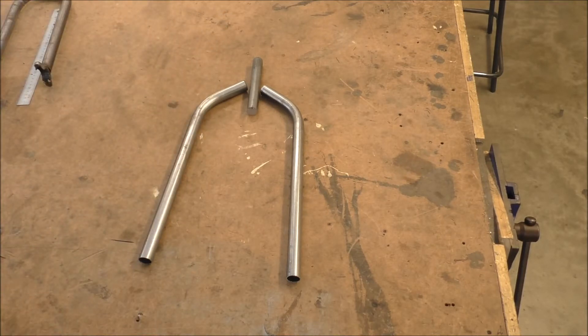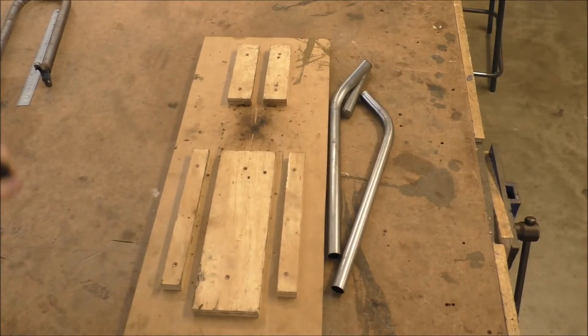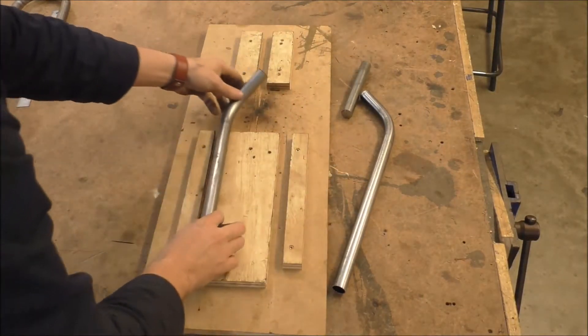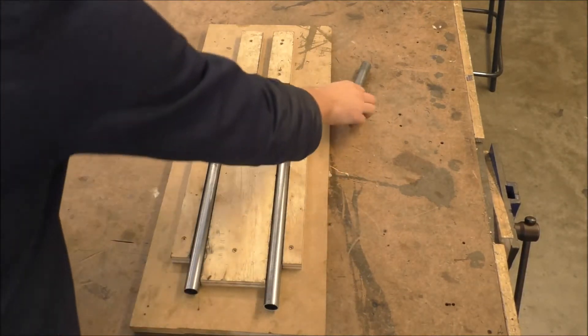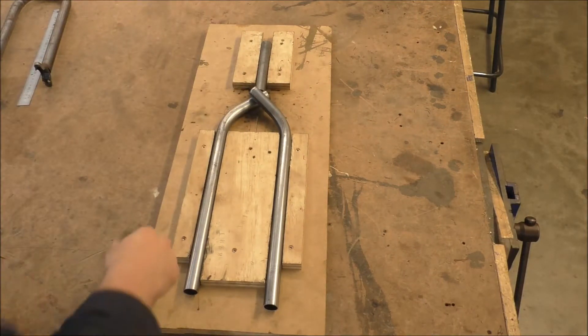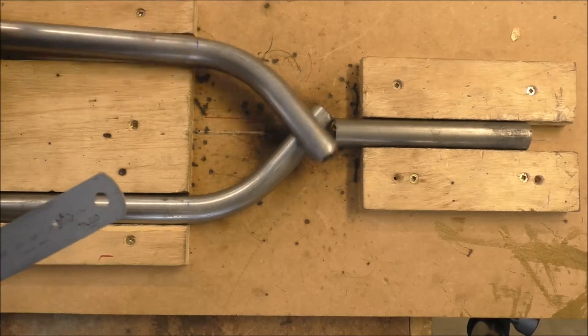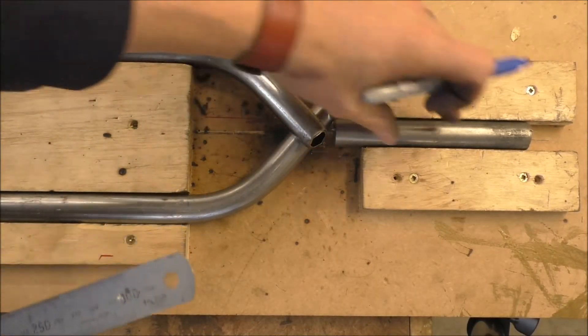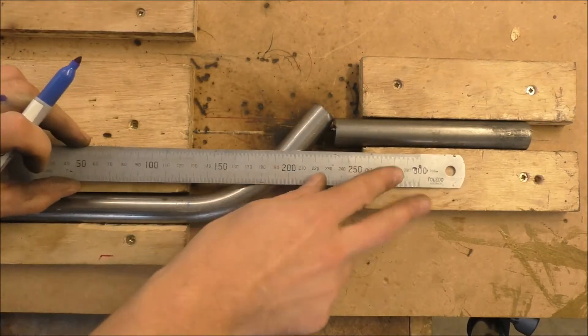This is where our handy dandy jig comes in. At this point we set them up and they're just still slightly too long. If we put the pin in place, clearly that doesn't quite work. So from here what we want to do is we want to be able to cut both of these legs in the correct place so that we can line it up with our central pin.